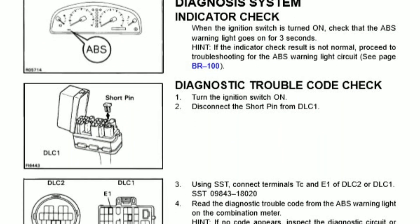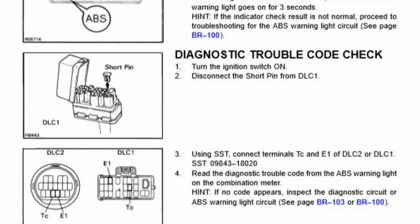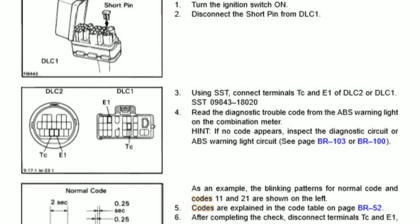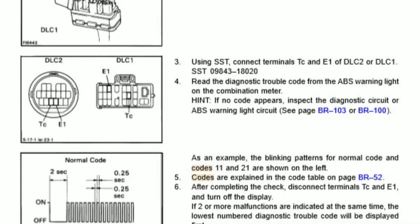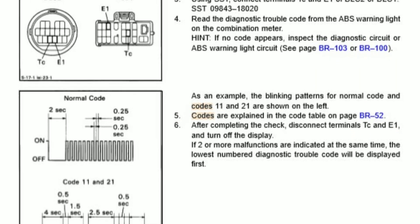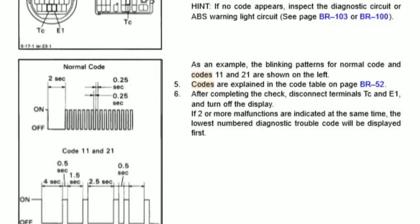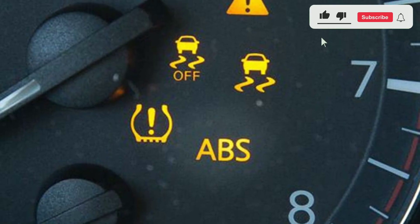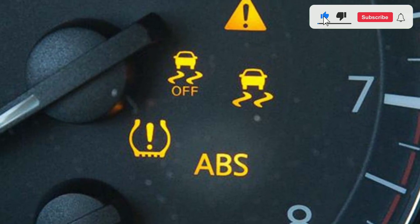Clearing ABS codes. If you've addressed the issue causing the ABS light and fixed it, you can use your scanner to clear the codes. However, if the problem persists, the ABS light will likely come back.